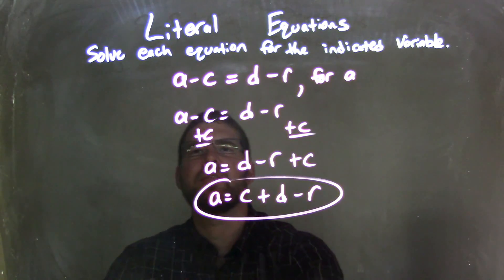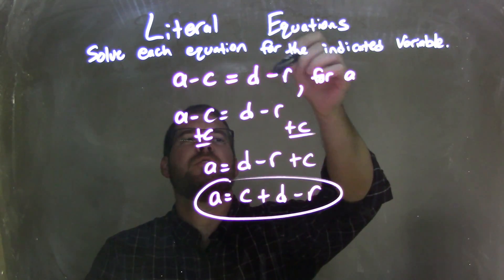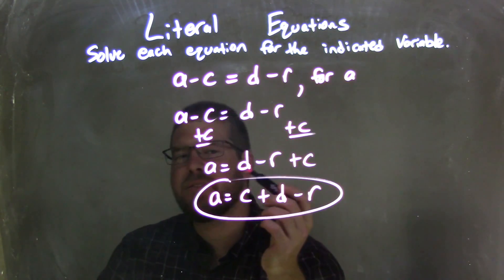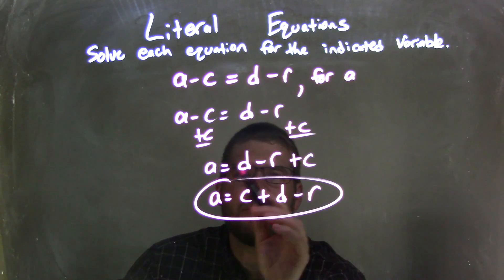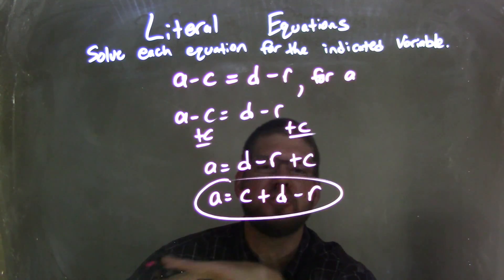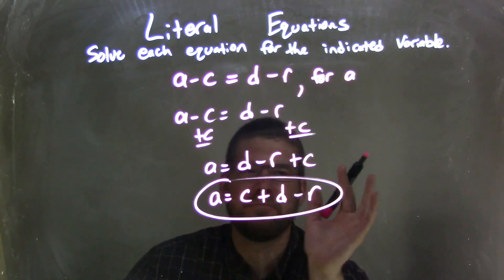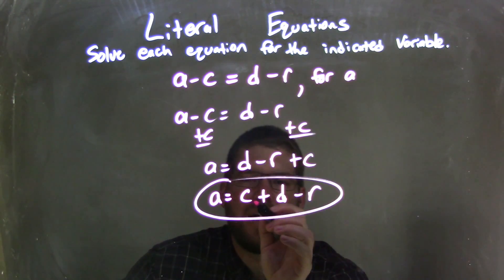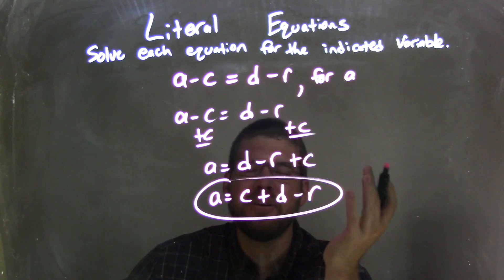So let's recap. Pretty simple problem: A minus C equals D minus R, and we're solving for A. Rewrote my equation, then I just added C to both sides, opposite of that subtraction, leaving A by itself equals D minus R plus C. Totally done. I would accept that right there. It works here for some reason. It means I have this C out first, but it really doesn't matter.